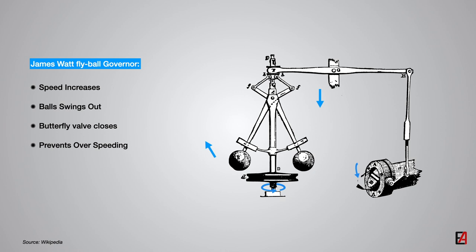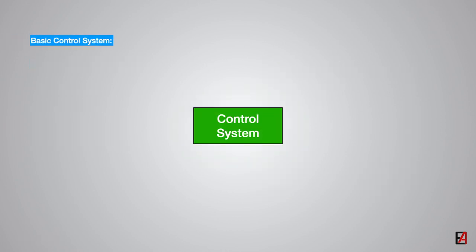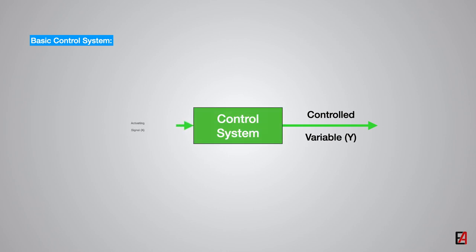The basic concept of a control system is shown here. The objective of this basic control system is to control the variable y in a predefined manner by actuating the signal x through the elements of the control system.